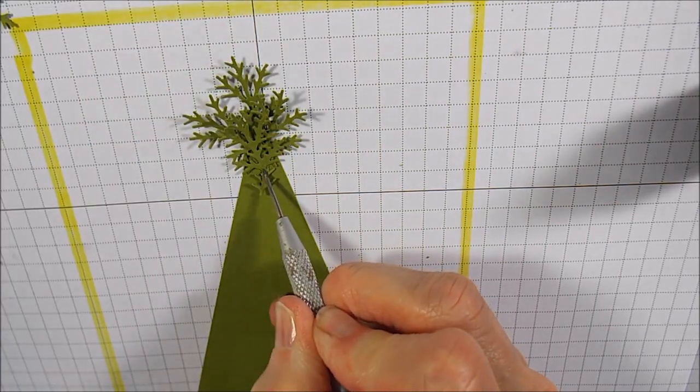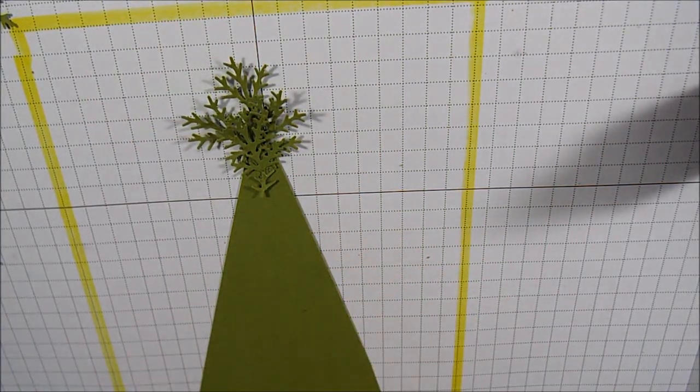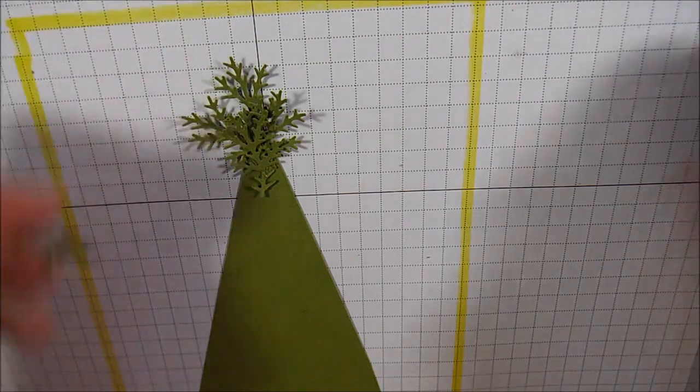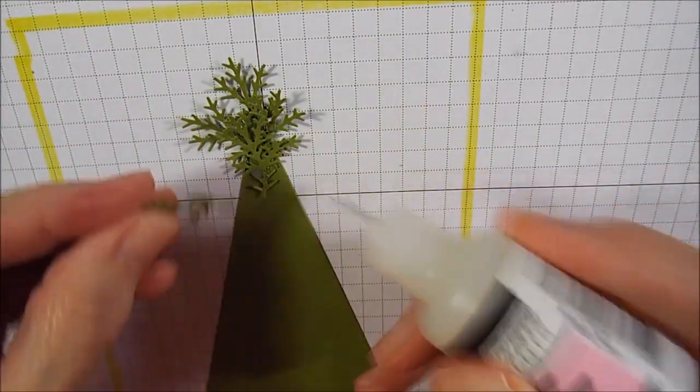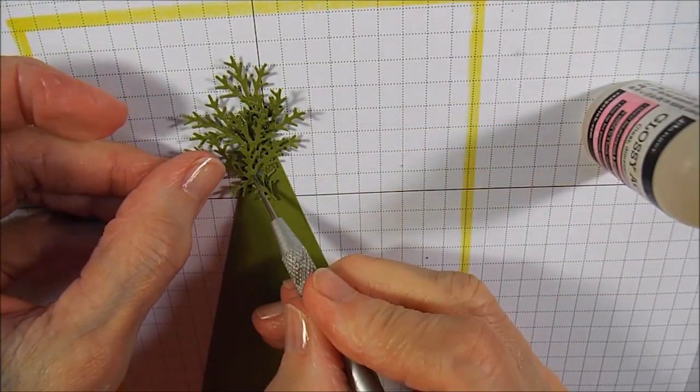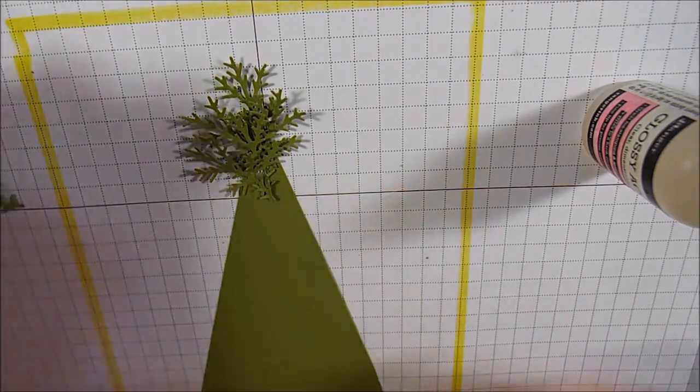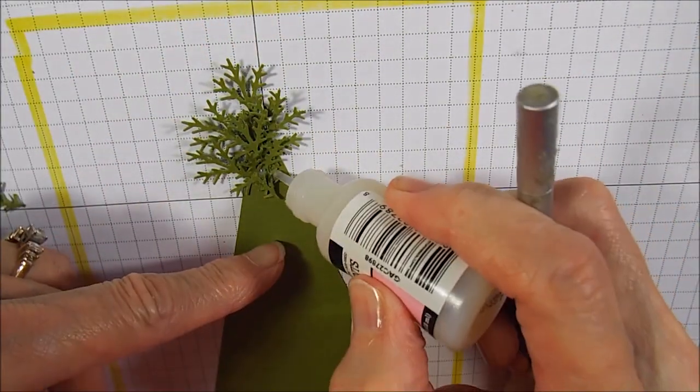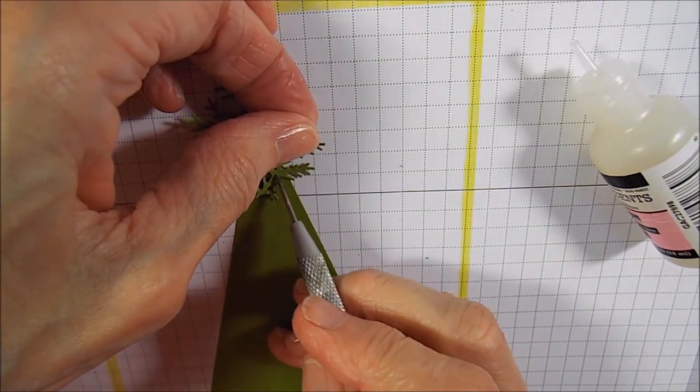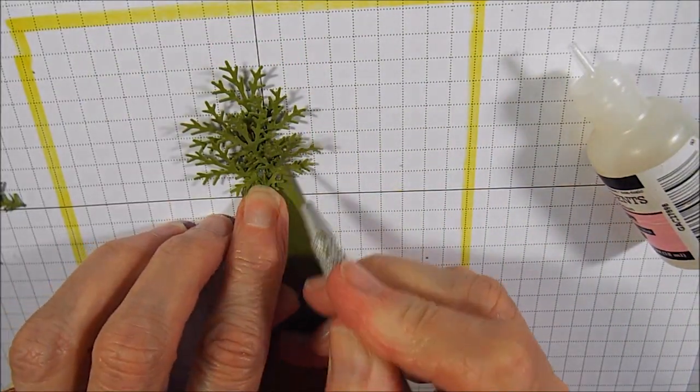And as we work down and get to the wider portions of the tree, we'll go two to the left and two to the right. And then you'll add three to the left, three to the right. I believe by the time I got down to the bottom of the tree, I actually had five to the left, five to the right.